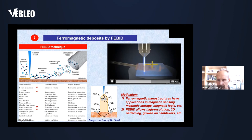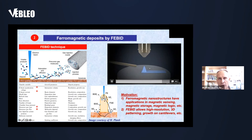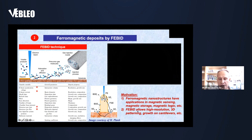By controlling the acceleration voltage, electron beam current, and appropriate precursor type and flux, you can create very nice ferromagnetic nanostructures: two-dimensional structures, three-dimensional out-of-plane wires, and nano-helices. Importantly, this process can be done on any substrate — for example on the very tip of an AFM cantilever, growing a nanowire additively. The motivation is applications in magnetic sensing, magnetic storage, and magnetic logic. FEBID allows high-resolution, three-dimensional patterning and growth on cantilevers.